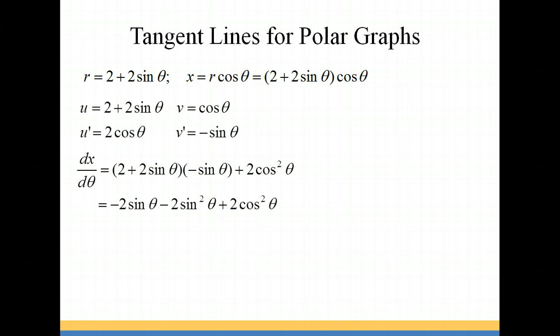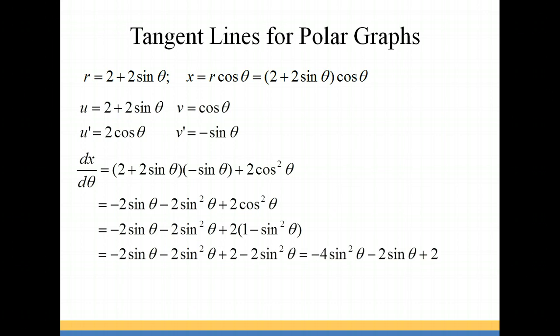I want to rewrite this in factored form, so I'm going to start by distributing the negative sine. Then I'm going to turn everything into sines by rewriting cosine squared as 1 minus sine squared. Then I distributed the 2 and brought all my like terms together, and I rewrote it in descending order. So I now have dx/dθ as negative 4 sine squared theta minus 2 sine theta plus 2. I saw that there is a common factor of negative 2, and I factor the remaining as 2 sine theta minus 1 times sine theta plus 1.